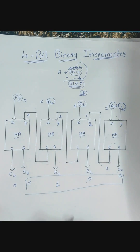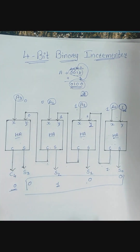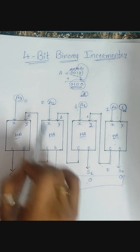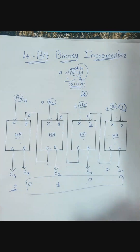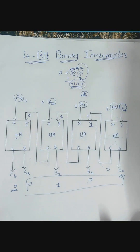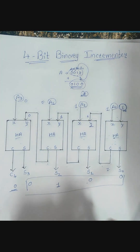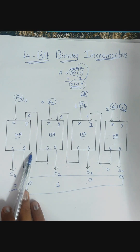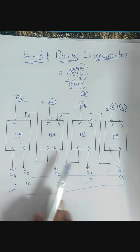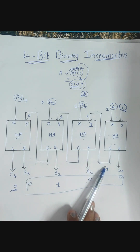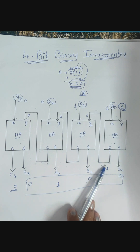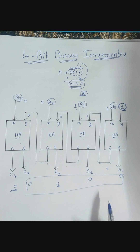So I'm getting the answer 0100 and the final carry is discarded. This is a very easy circuit — this is the 4-bit binary incrementer. If you want to create an 8-bit binary incrementer, instead of four half adders you just need to add eight half adders. Don't be afraid of circuits — computer organization is all about circuits and it's very simple. Thank you very much.